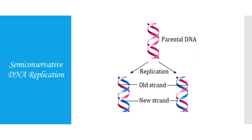Before discussing the experiment we must understand the meaning of semi-conservative DNA replication. Here I have shown a parental DNA duplex, and before it undergoes replication this duplex unwinds, separating the two strands, and on both strands new strands are synthesized. As a result, two new duplexes are formed, and in each duplex one is the old strand — the pink one is the old strand — and this is the newly formed strand, the blue colored one.